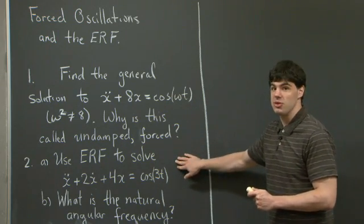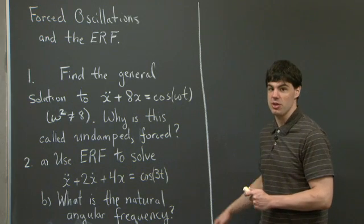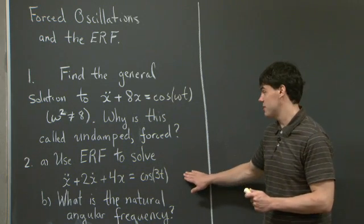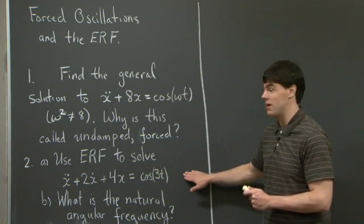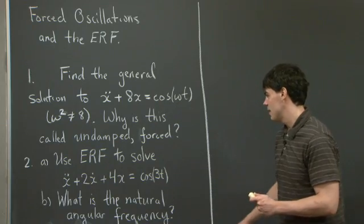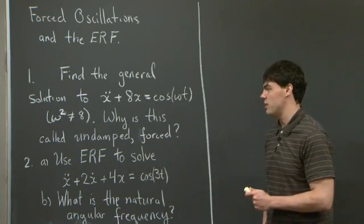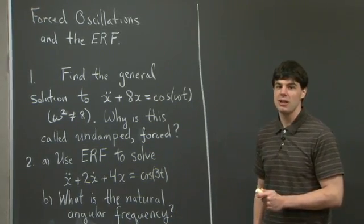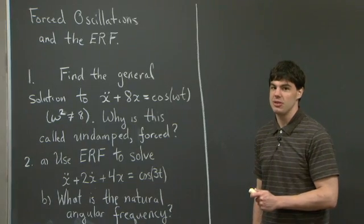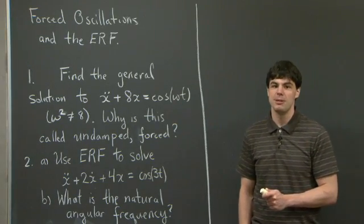For part two, we're asked to use the ERF to solve the differential equation x'' + 2x' + 4x = cos(3t). I'll let you take a look at these problems and try them out for yourself, and I'll be back in a moment.